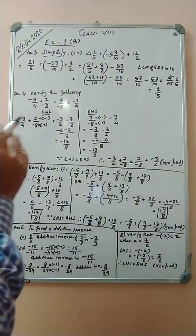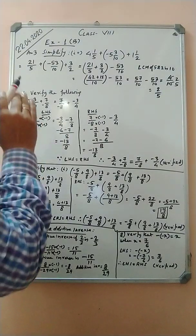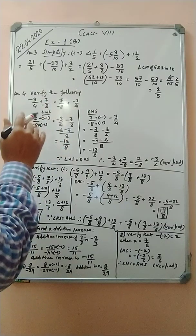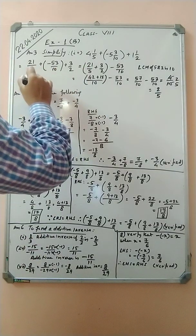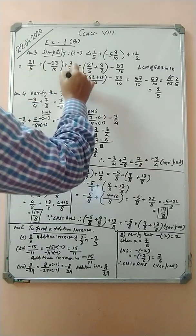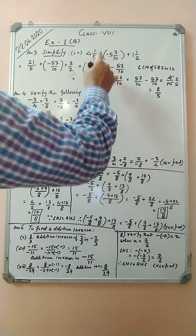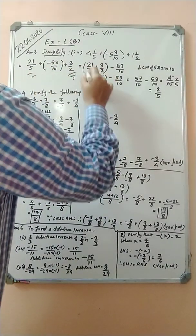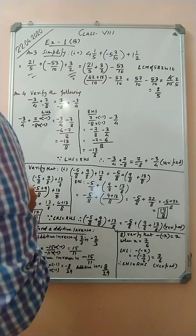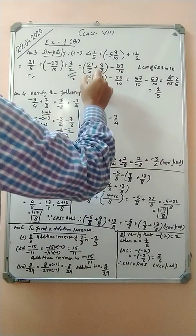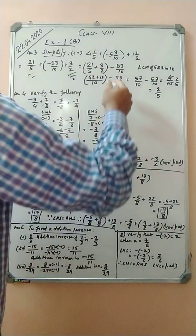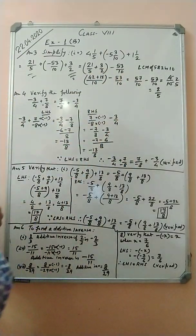First I am rearranging by grouping the numbers with positive signs together. So I write 21/5 plus 3/2 first, then subtract 53/10. Finding the LCM of 5 and 2, which is 10: 21/5 becomes 42/10, and 3/2 becomes 15/10.